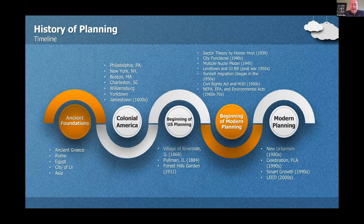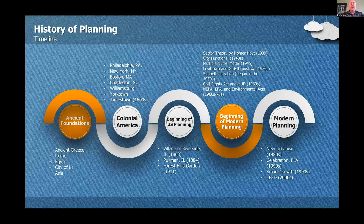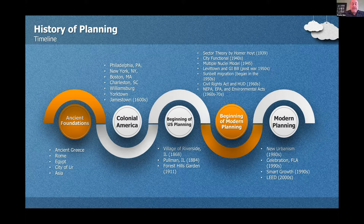This slide illustrates some of the general timeline of planning history you should be familiar with. Moving from left to right, the chart highlights five key moments in time for the profession, including ancient foundations, colonial America, the beginning of U.S. planning, the beginning of the modern planning movement, and finally modern planning. For each of those, we list only a small set of examples. For each of these examples, ask yourself: why was it important for planning, what was unique about it, why is it worth knowing, who was involved, and why is it something I should know for the exam?